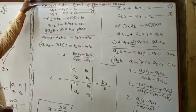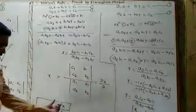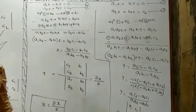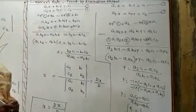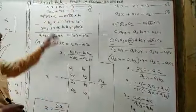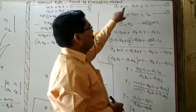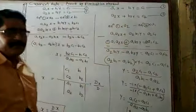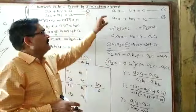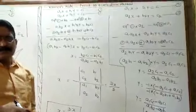We have to prove Cramer's rule using the elimination method — that x equals Dx over D and y equals Dy over D. To do this, we use the two simultaneous equations: a1x + b1y = c1 (equation 1) and a2x + b2y = c2 (equation 2). I am writing these separately for your understanding.